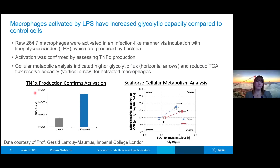TNF-alpha is a cytokine that these macrophages produce when they interact with lipopolysaccharides or when they're activated. We can see in the LPS-treated case that the macrophages do indeed produce more TNF-alpha. If we do our cellular resolution analysis of metabolic rates in these cells using the cell phenotype assay, looking at both oxygen consumption rate and extracellular acidification rate, we can see that the LPS-treated cells have increased extracellular acidification or increased glycolytic rates under both the basal and stress conditions. The LPS-treated cells also have less ability or less maximal oxygen consumption rate than the untreated cells.